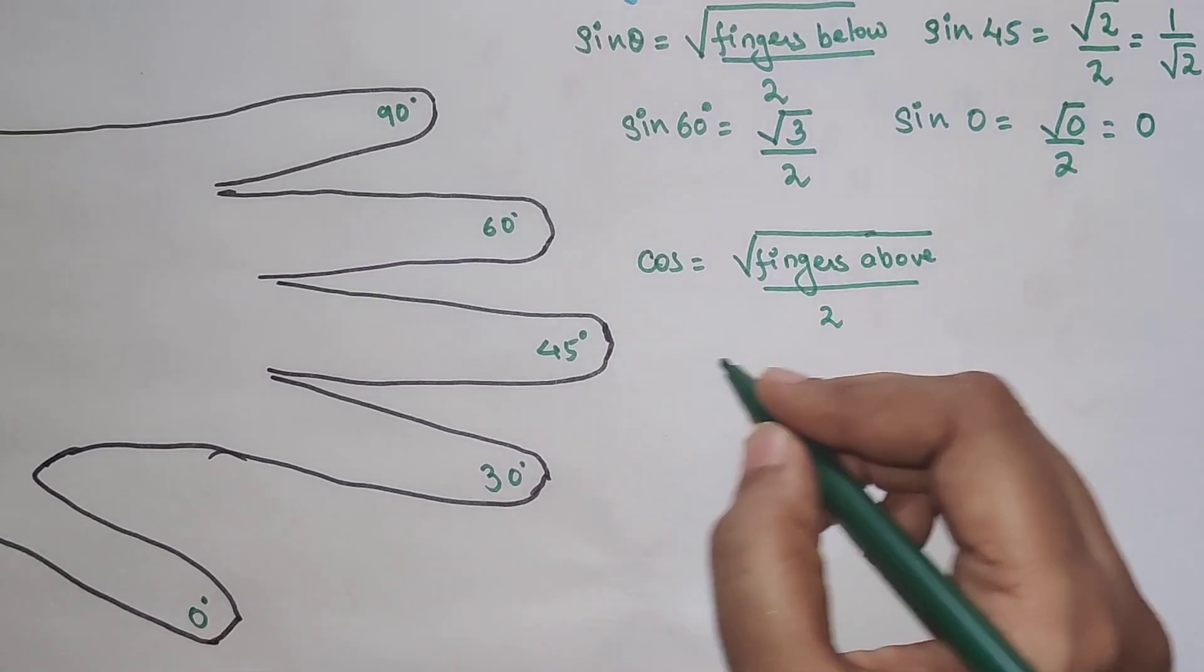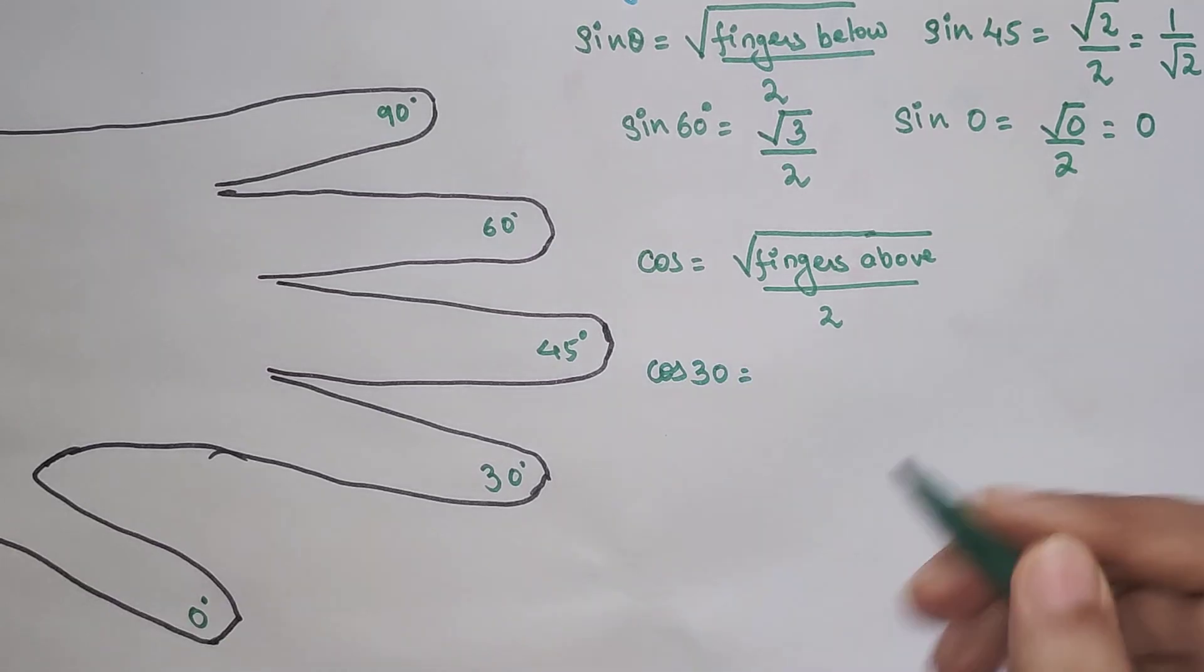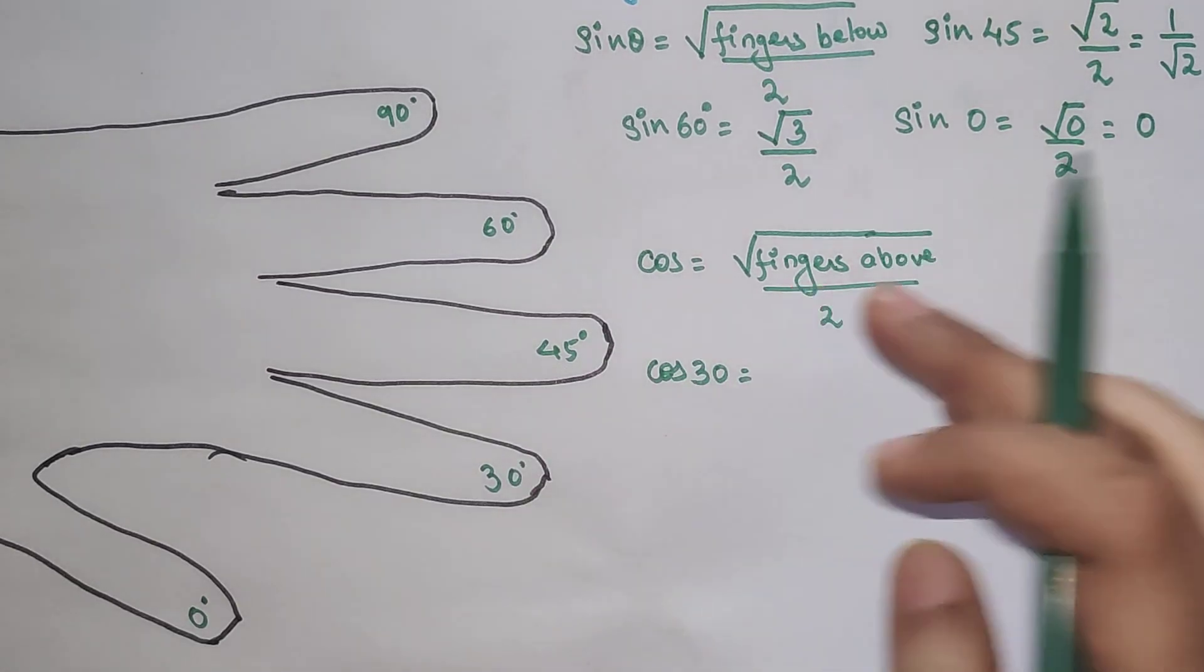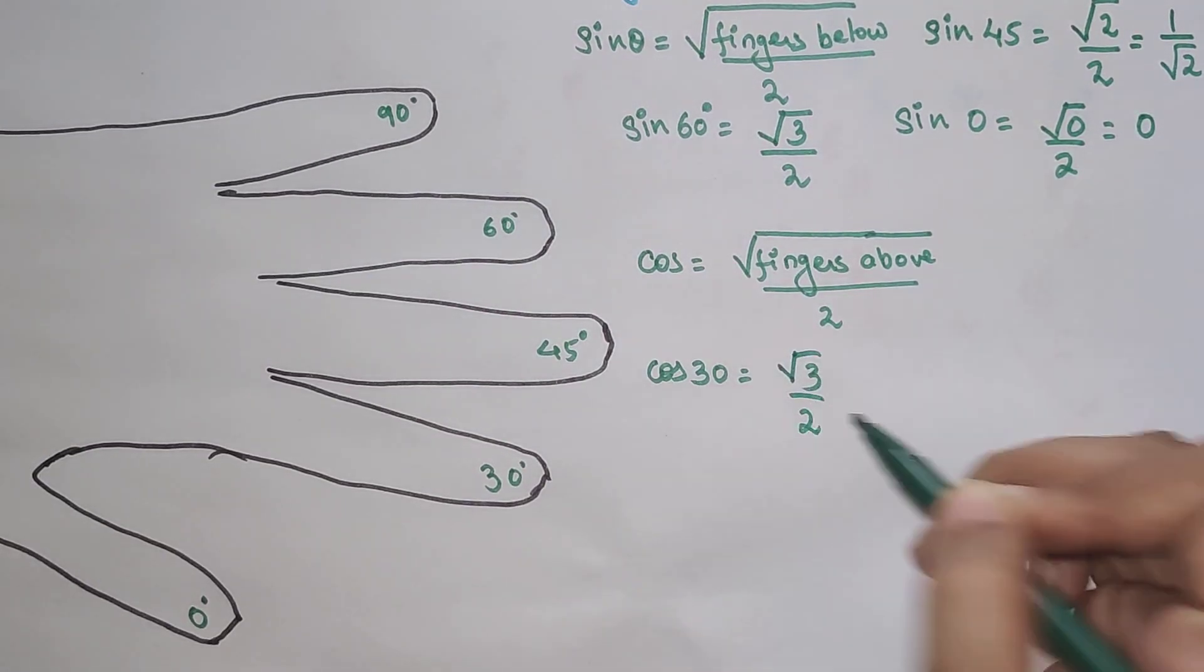Now let's try and find out what is the value of cos 30. Now cos 30 we have 3 fingers, right? 1, 2 and 3. So root 3 upon 2.